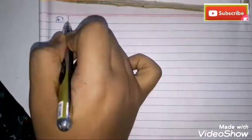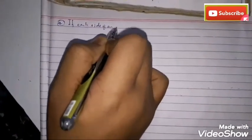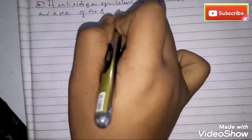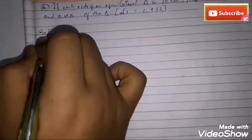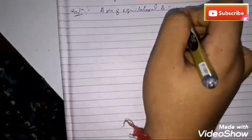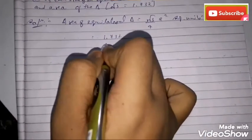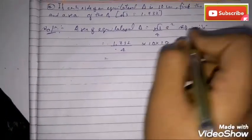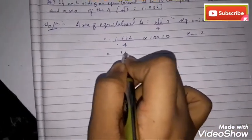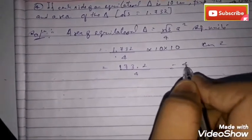Next question: if each side of an equilateral triangle is 10 centimeters, find the altitude and area of the triangle. Take √3 = 1.732. Area of equilateral triangle = (√3 / 4) × a² = (1.732 / 4) × 10 × 10 = 173.2 / 4 = 43.3 square centimeters.